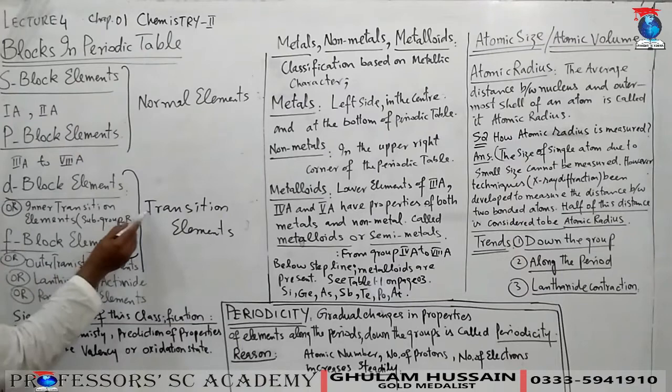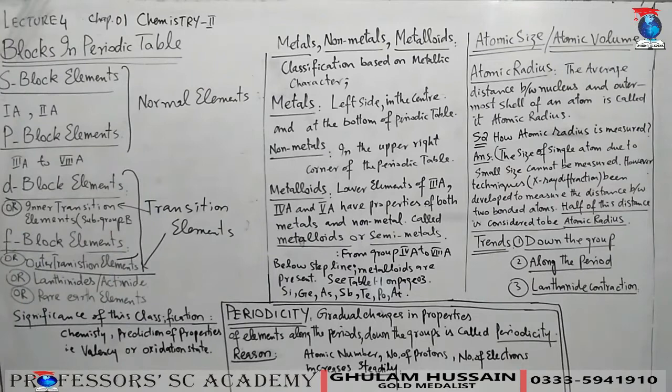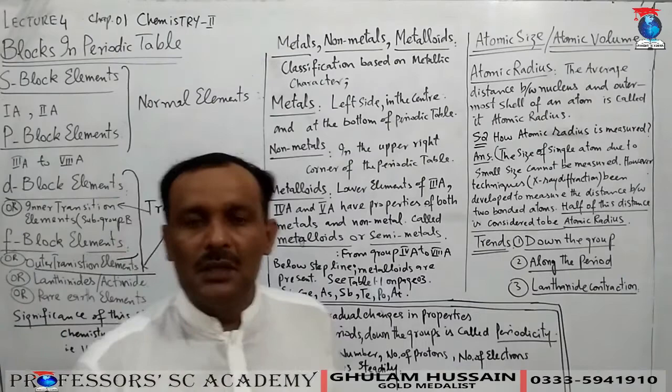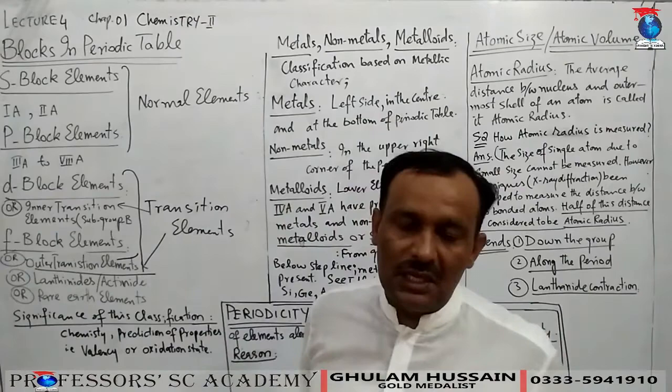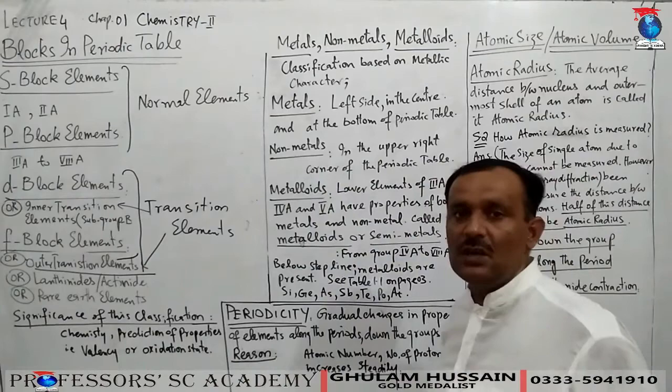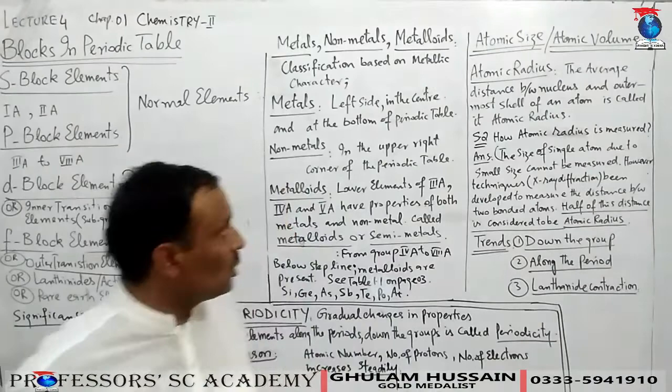So there are two types of transition elements. Because understanding them and predicting their valency or oxidation state is straightforward. Now we move to the fourth feature of the periodic table: metals and non-metals.